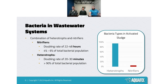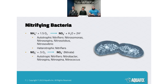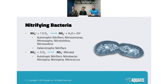When we zoom in on nitrification bacteria, we're talking about two different groups: ammonia-oxidizing bacteria and nitrite-oxidizing bacteria. The whole reaction goes from ammonia to nitrate in two steps — ammonia oxidizers take it from ammonia to nitrite, then a separate group of nitrite oxidizers goes from nitrite to nitrate. There are only a handful of nitrifier species, compared to hundreds of thousands of heterotrophic species in your wastewater plant.